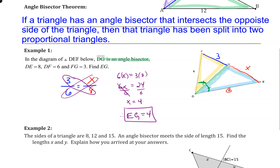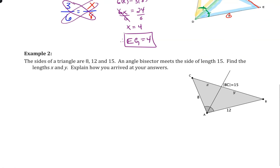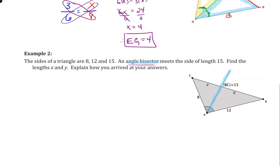That's the angle bisector theorem — it allows us to make a proportion and gives us a quick method to solve. Let's try example two, which is a slightly more advanced version. We still have an angle bisector, but in this scenario the given information includes the three sides of the big triangle: one side is 8, another is 12, and the entire side BC is 15.